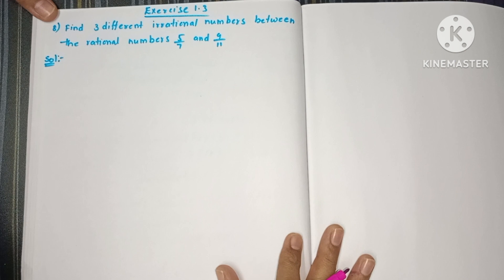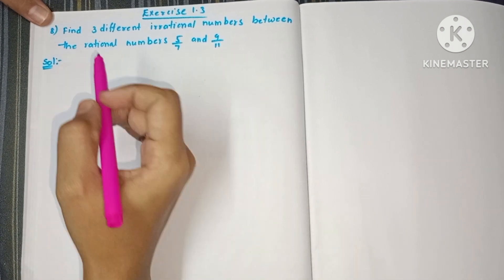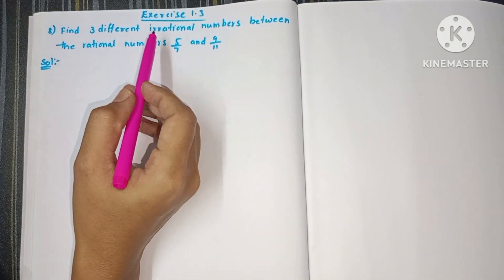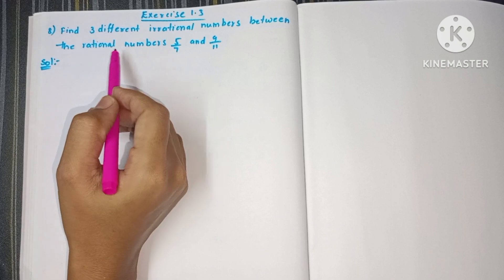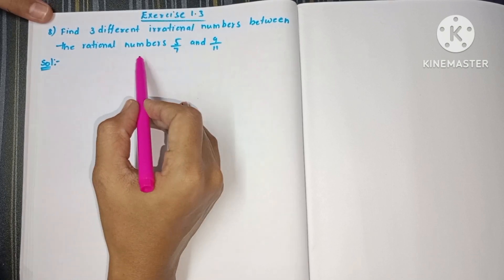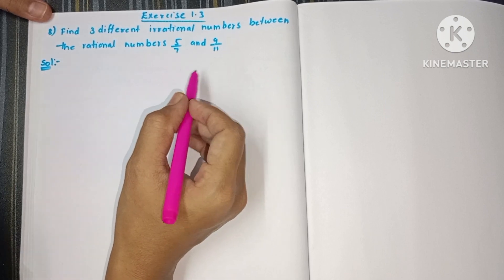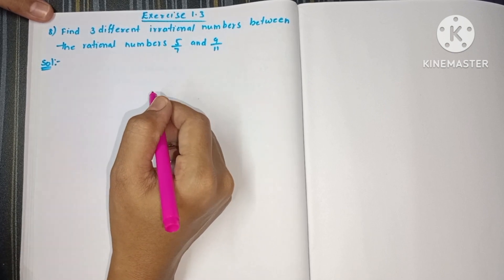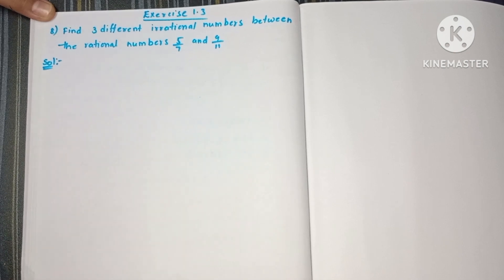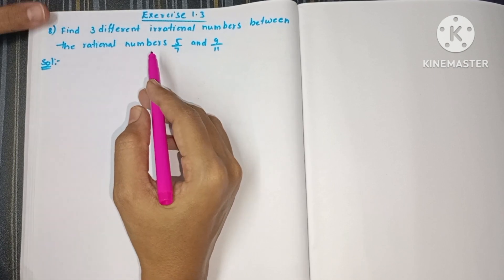Hello students, welcome to my channel. Today in this video we are going to see the eighth problem of exercise 1.3: find three different rational numbers between the rational numbers 5 by 7 and 9 by 11. So here we have two rational numbers, 5 by 7 and 9 by 11, and we need to find out three rational numbers between them.